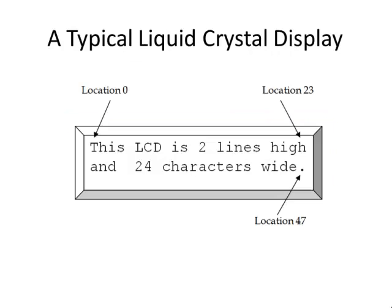In some ways, an LCD can be thought of as a series of memory locations, with each location holding one character. Each position on the screen is one location with an address. So a 24x2 display has 48 locations, as we see here. Remember, we always start counting with 0, so those locations are addressed 0 through 47. To display a character, you position the cursor at the desired location and send the ASCII code for the character you want displayed.